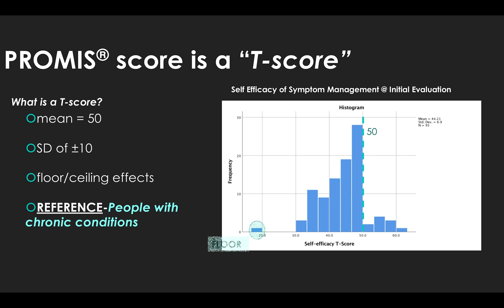For floor and ceiling effects, we can see some scores are low, and there also can be higher scores. For the most part, patients score from about 30 to 70 — about two standard deviations below or above the mean. A score of 30 is somewhere near the lowest confidence level this scale detects, and higher confidence levels compared to other people with chronic conditions are achievable.